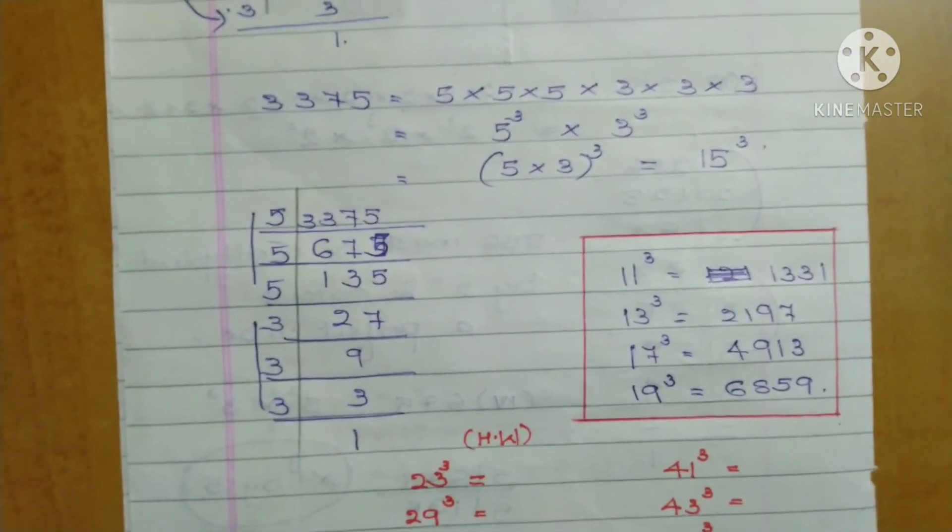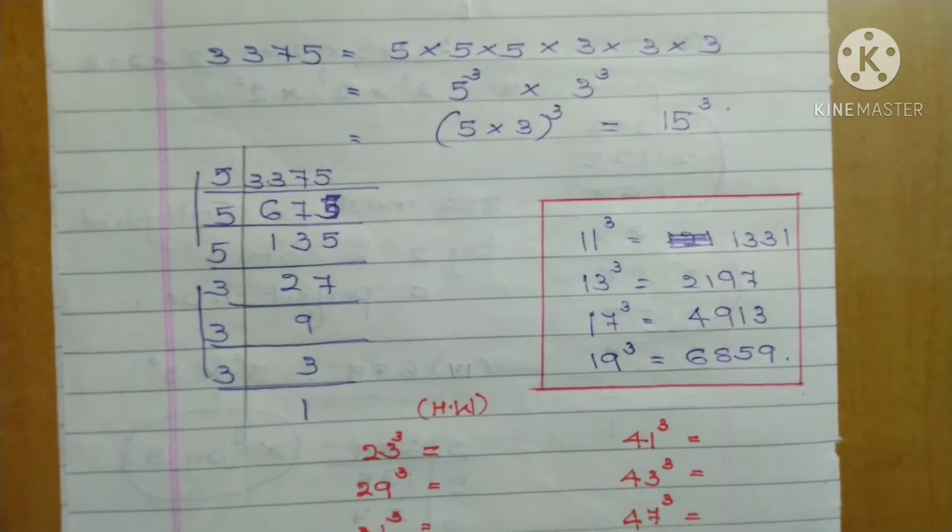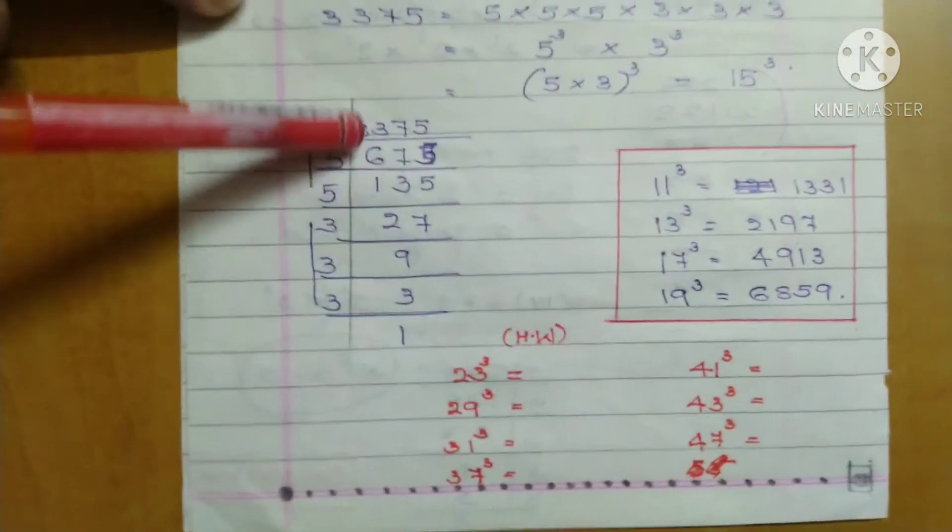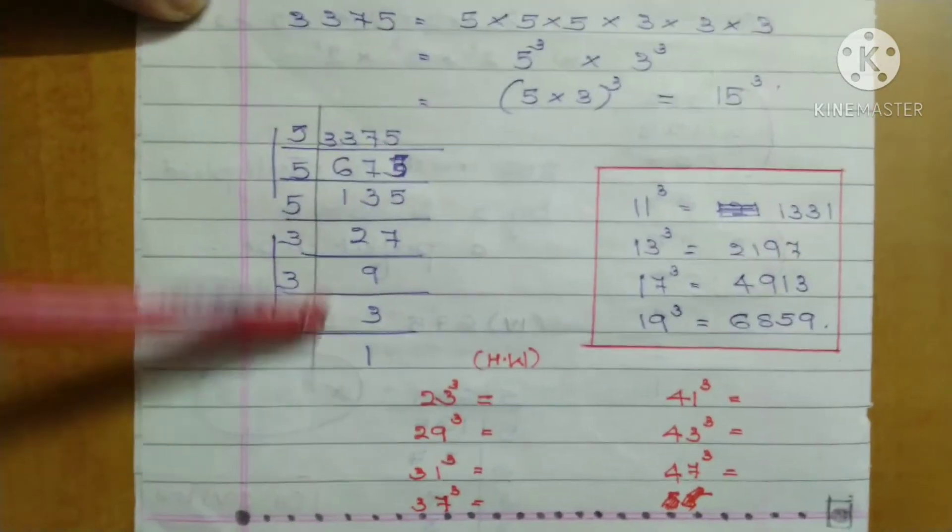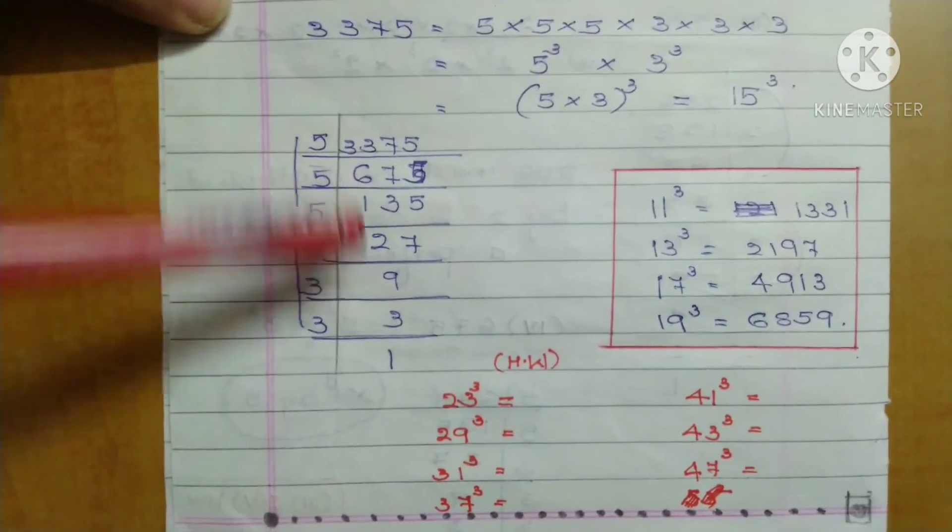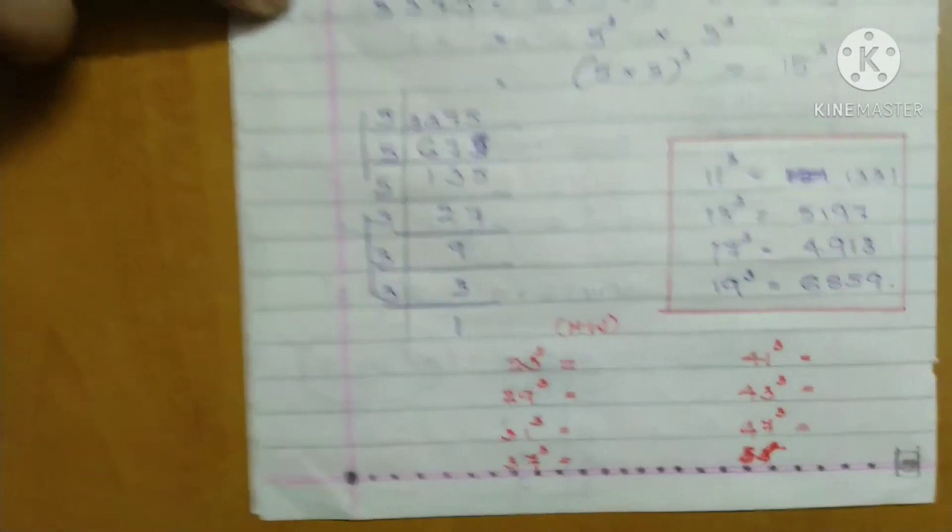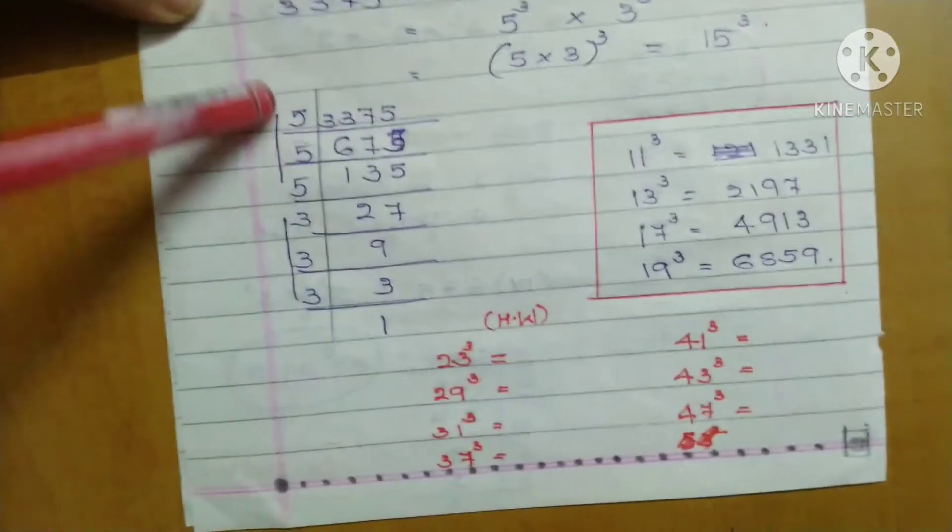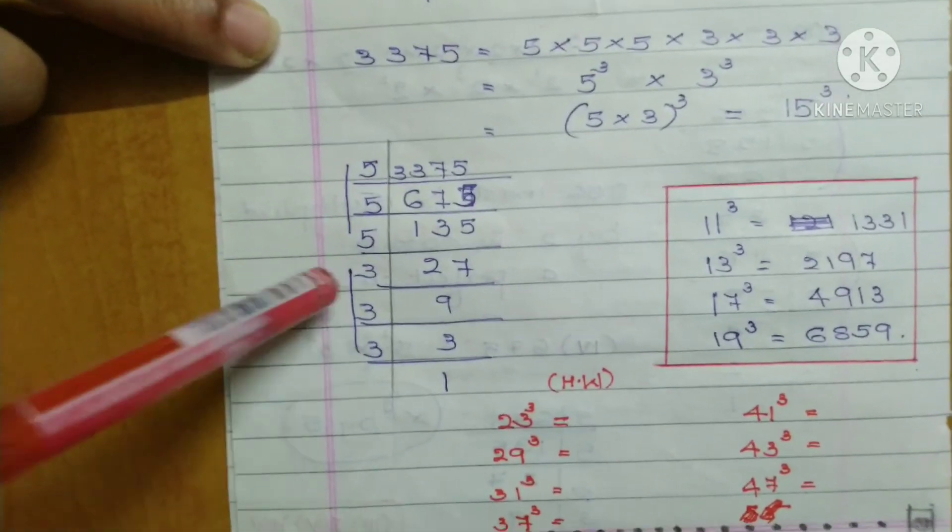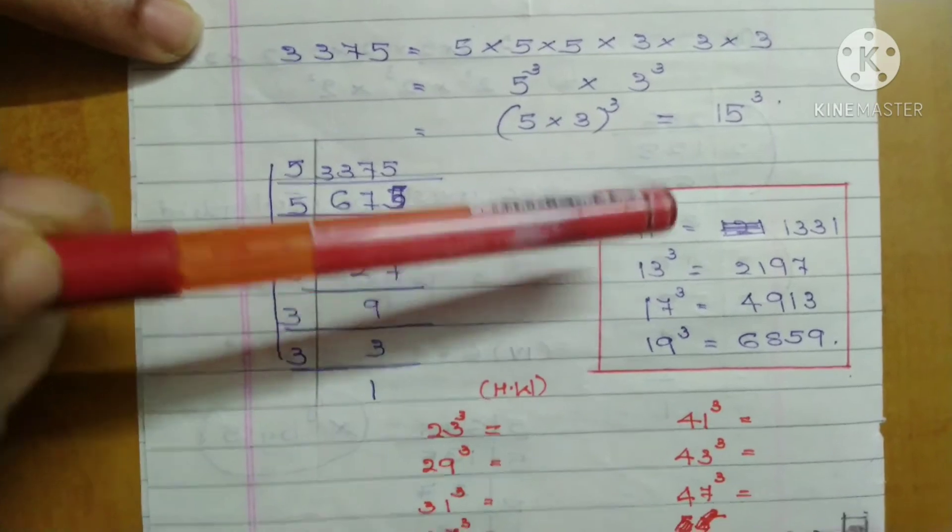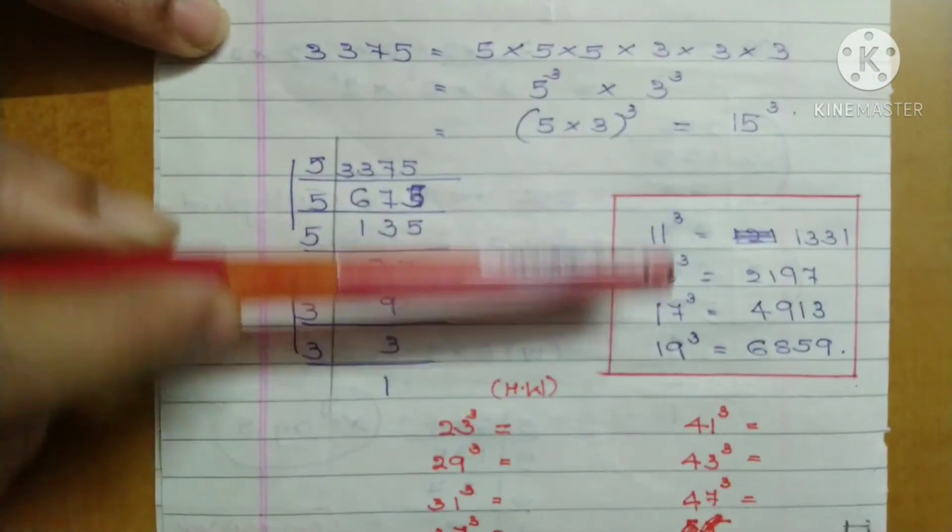You have to memorize prime numbers. Otherwise when using this method, sometimes you'll get stuck. If it's a composite number, no problem—you'll find the factors. But if it's a prime number, you must know them. For example, 11³